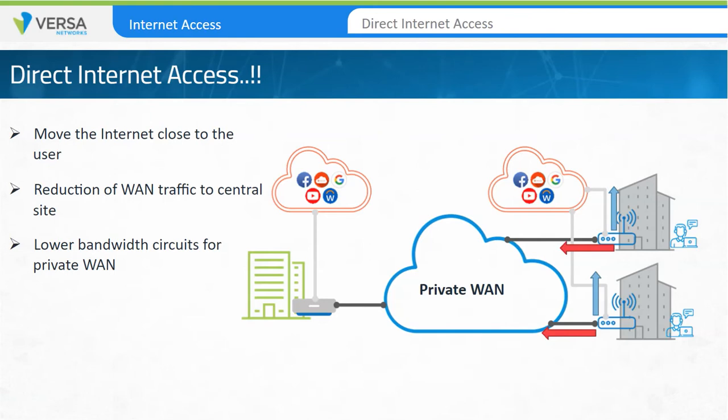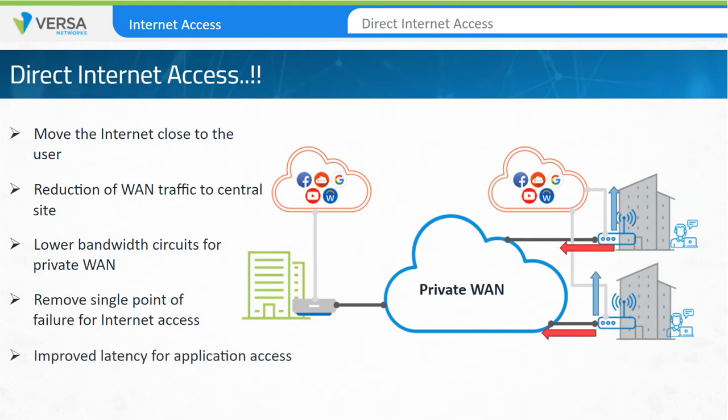The DIA model removes the single point of failure for internet services. If the internet access to the centralized site is interrupted, it has no effect on remote sites. The DIA model also improves latency for applications at remote sites. Because the sites have direct access to internet-based services, the latency introduced by the centralized model is removed and application performance improves.